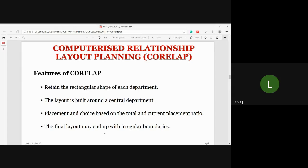If we have food supply or catering, we need central and common access for food distribution. Third feature: placement and choice based on the total and current placement ratio. Placement is based on the choice using the total and current placement ratio.